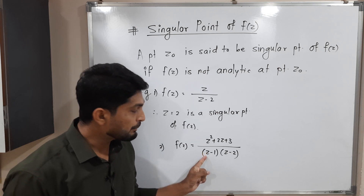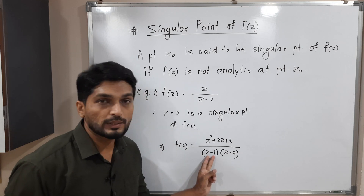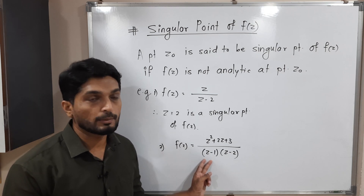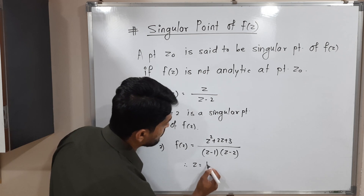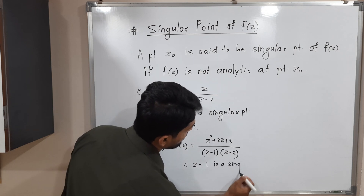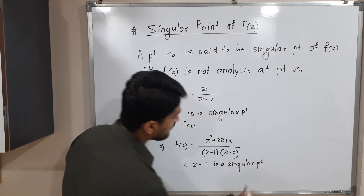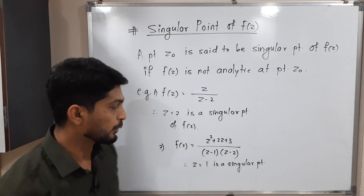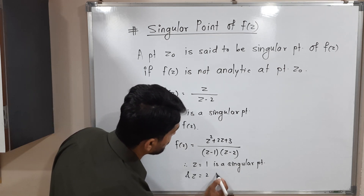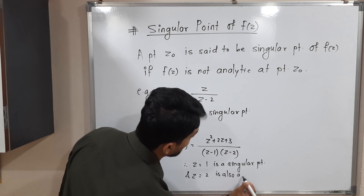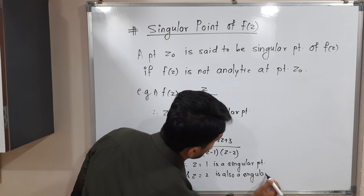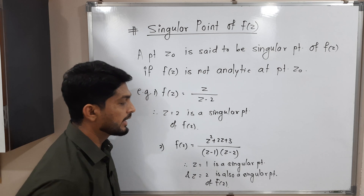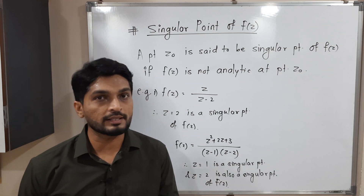If I put z is equal to 1, then 1 minus 1 is 0. That means for z is equal to 1, we are getting 0 at the denominator, so that is why it is a singular point. Therefore, z is equal to 1 is a singular point. Similarly, if I put z is equal to 2, then the denominator is also 0. So z is equal to 2 is also a singular point of f of z. That means the given function f of z has two singular points: z is equal to 1 and z is equal to 2.